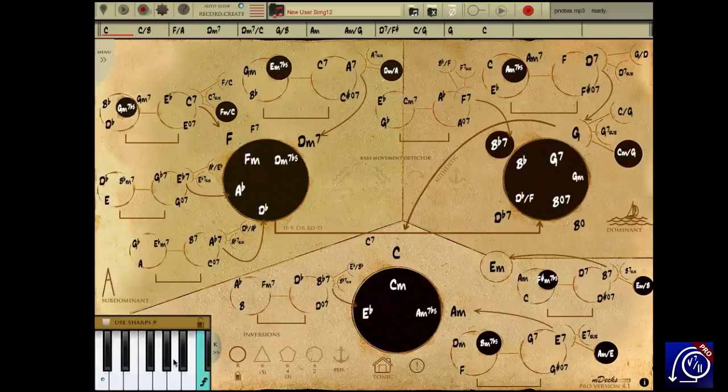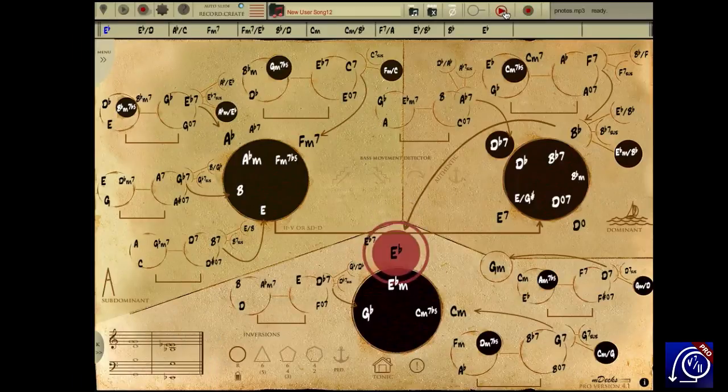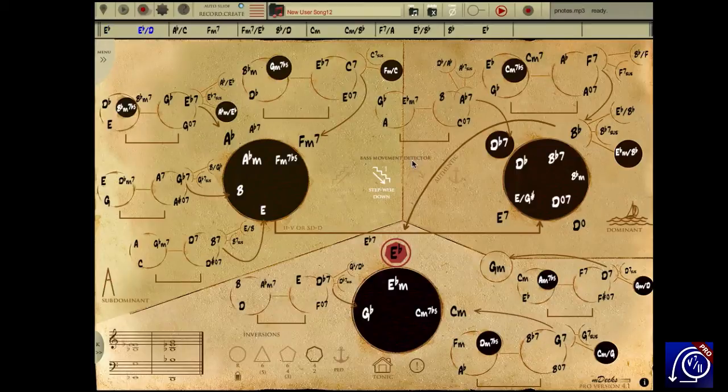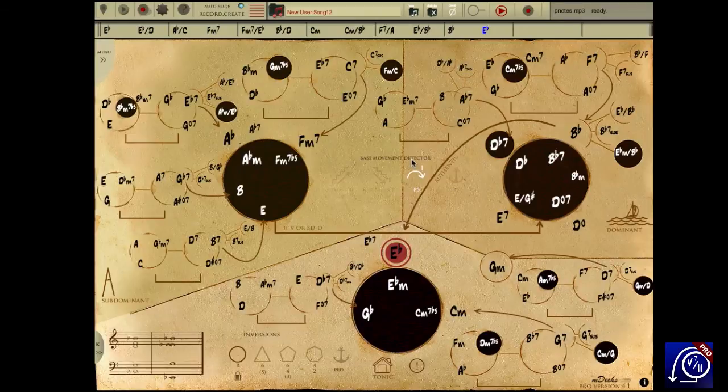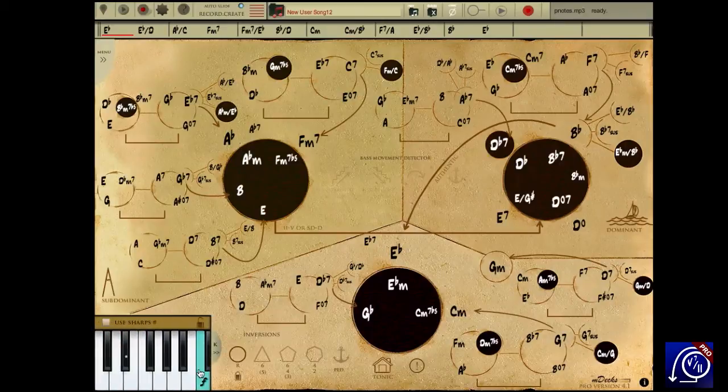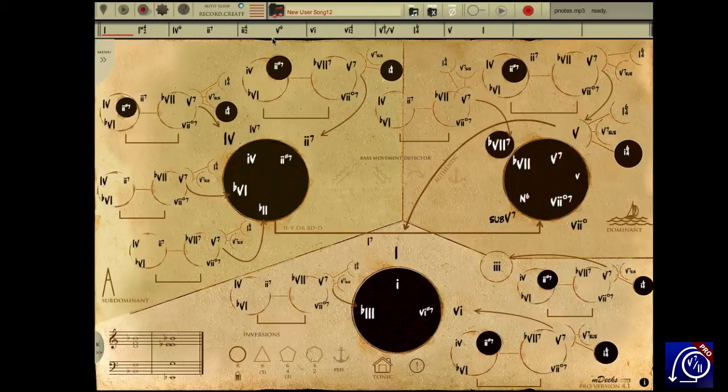Let's view the map in another key. Let's listen. Now in functional view. All functions in the staff panel now show the chords functionally and in their respective inversions.